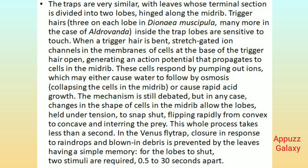When a trigger hair is bent, stretch-gated ion channels in the membranes of cells at the base of the trigger hair open, generating an action potential that propagates to cells in the midrib. These cells respond by pumping out ions, which may either cause water to follow by osmosis, collapsing the cells in the midrib, or cause rapid acid growth. The mechanism is still debated. But in any case, changes in the shape of cells in the midrib allow the lobes, held under tension, to snap shut, flipping rapidly from convex to concave and ensnaring the prey. This whole process takes less than a second.